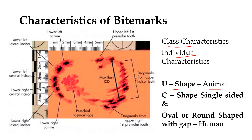A C-shape is seen in one-sided bite marks, most commonly from the maxillary arch. Molar injuries onto the skin can also be seen. When both jaws — mandibular and maxillary — are involved, an oval or round shape with a gap between the two jaw impressions is produced.